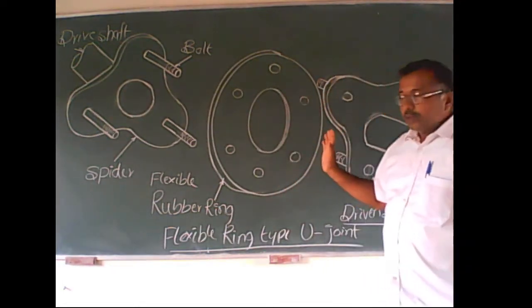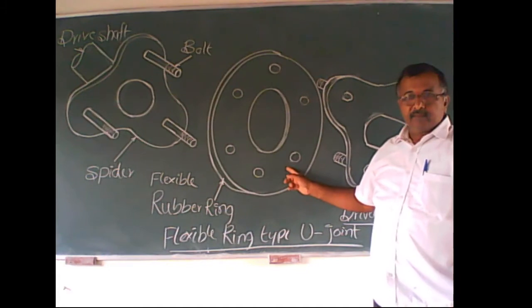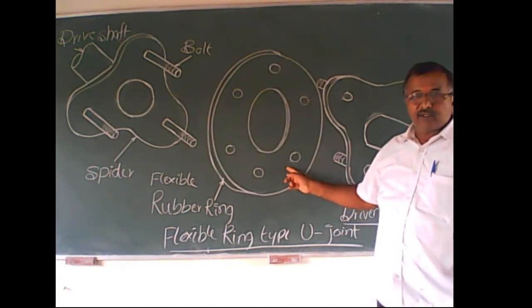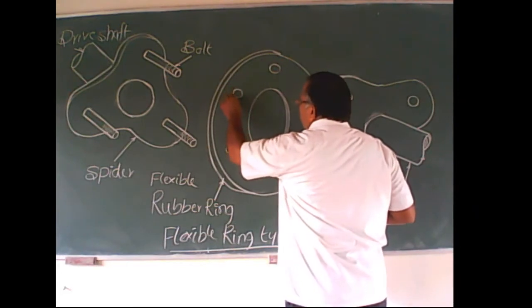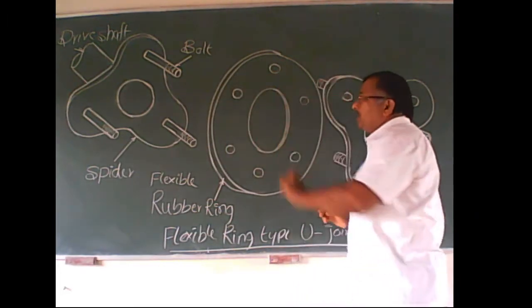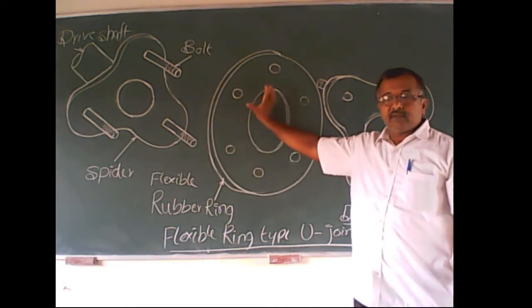In between two, there is a flexible rubber ring. Ring is of fabric. Now, it consists of six bolts. Six driven bolts at equal intervals, at equal distances.